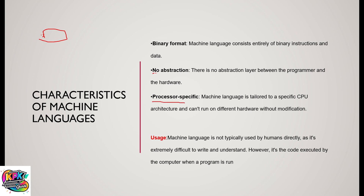Third, it is processor-specific — machine language is tailored to a specific CPU architecture and cannot run on different hardware without modifications. For example, machine language tailored for a Nintendo or PS4 cannot be executed on a laptop because they use different hardware. Machine language is not typically used by humans directly, as it is extremely difficult to write and understand; however, it is the code executed by the computer when a program is run.